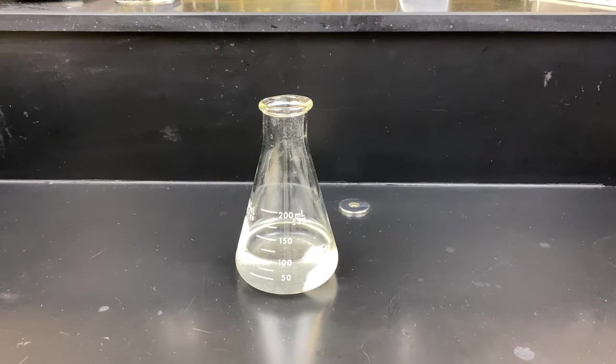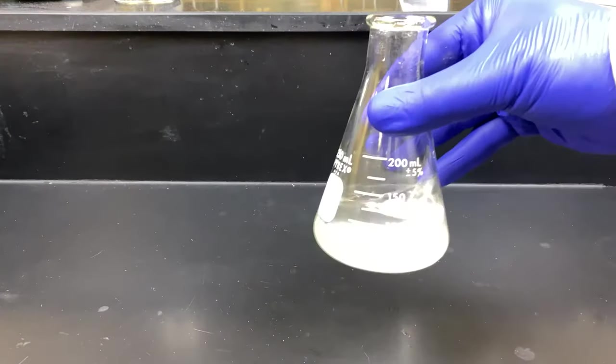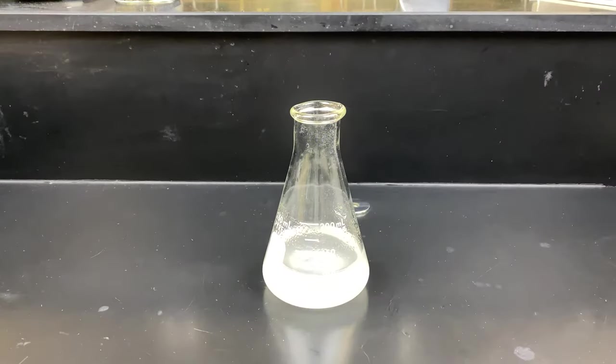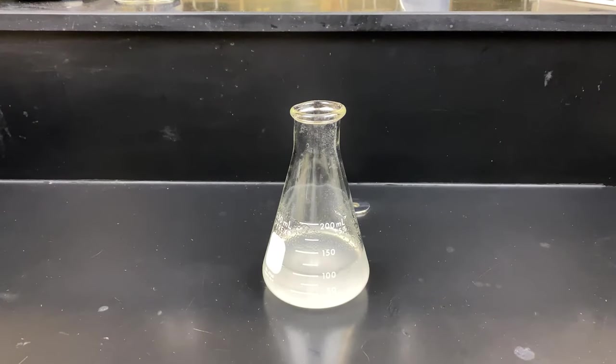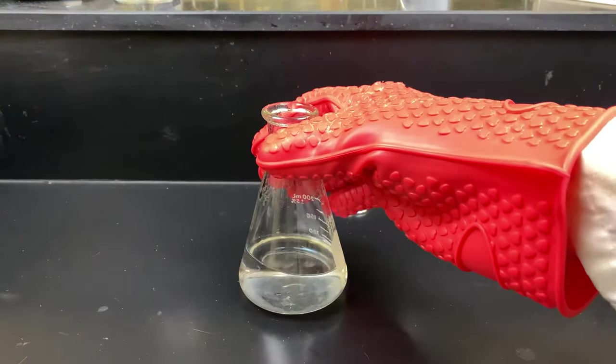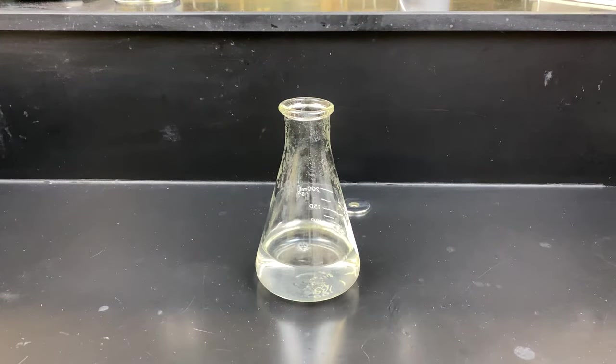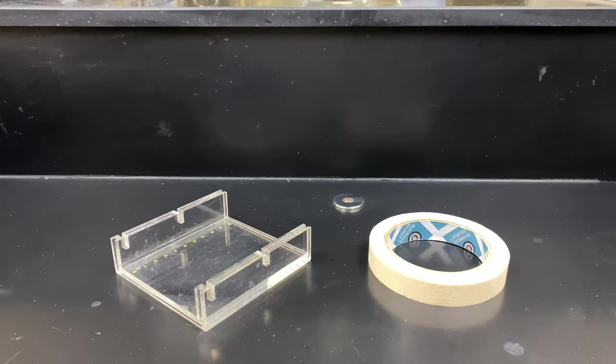The agarose will not dissolve in the TAE directly. It must be heated. We'll use a microwave at 70% power for about a minute and 45 seconds, maybe 2 minutes, until you see it boiling. We will then take it out with a heat glove. Here it is. You can see it has dissolved in the TAE. We must wait for it to cool. It's cool enough when you can pick it up with your bare hand, and it does not hurt.